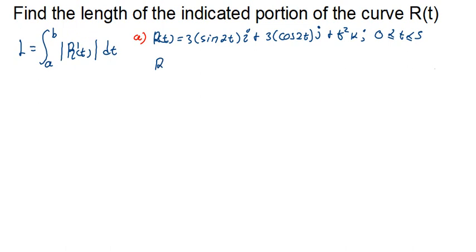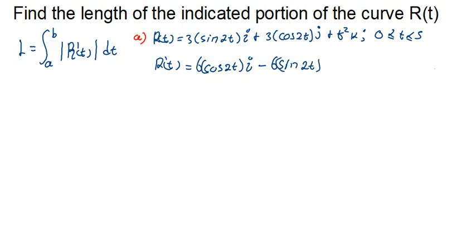The first derivative of R(t) is: R'(t) = 6cos(2t) i minus 6sin(2t) j plus 2t k.